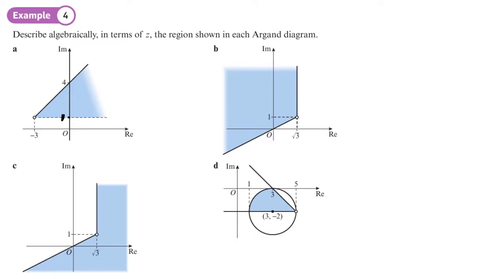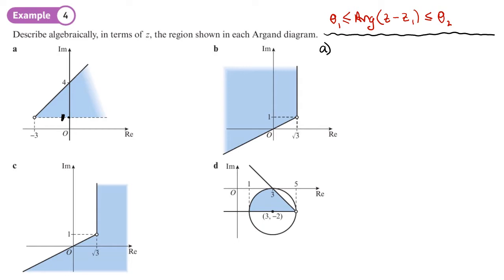On this question we want to describe algebraically in terms of z the region shown in each Argand diagram. We want to give our answers in the form theta one ≤ arg(z − z1) ≤ theta two, where the symbols may be slightly different depending on whether we have a solid or dotted line. With all of these we need two things: we need the value of z1 where the half line starts, and the angles where the shading starts and finishes.